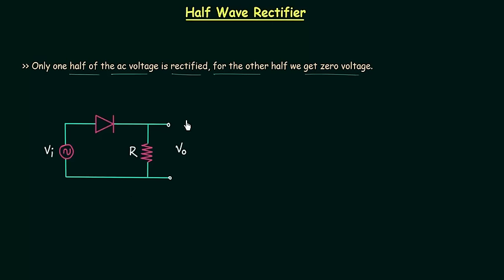This is the circuit of half wave rectifier. VI is the input AC voltage. This is the diode and we are measuring the output voltage across resistance R.